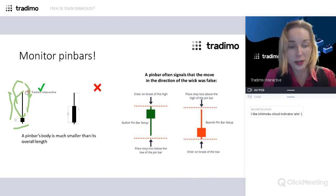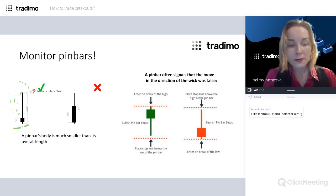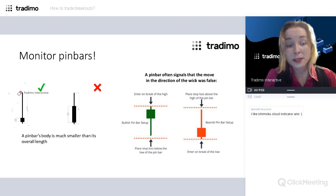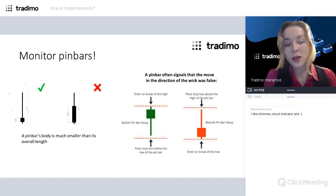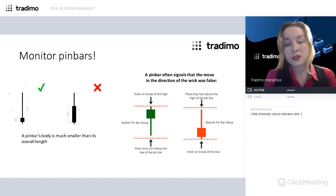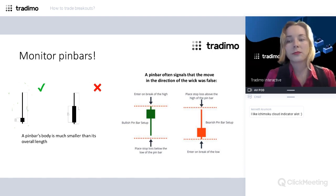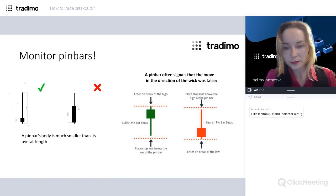If this pin bar candlestick is located at an important support or resistance level — where the price tried to break above resistance but then failed and formed a pin bar — the clue for us is to enter the market in the opposite direction. This tells us that the resistance level is strong, it managed to hold the price action, and we have a credible trade idea in the direction opposite to the false breakout.